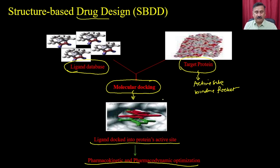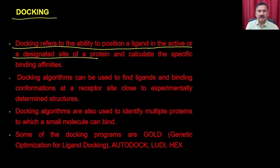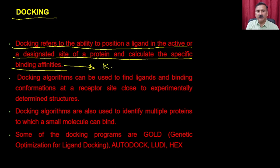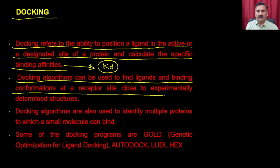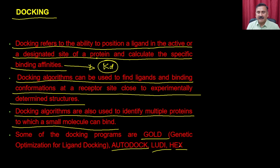What is docking? Docking refers to the ability to position a ligand into the active site or a predefined designated site of a protein and calculate the specific binding affinities. Docking algorithms can be used to find the ligand and the binding conformation at a receptor site close to the experimentally determined structures. Docking algorithms are also used to identify multiple proteins to which a small ligand can bind. Some important docking programs include GOLD, AutoDock, LUDI, and HEX — some are free, others are licensed programs.